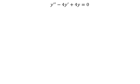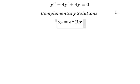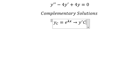Hey guys, welcome back to my channel. Today I want to show you how to answer this one. We can use complementary solutions, so in this case we need to find yc, which is about e to the power of lambda x. So if we do the first derivative of this one, we have lambda e to the power of lambda x.